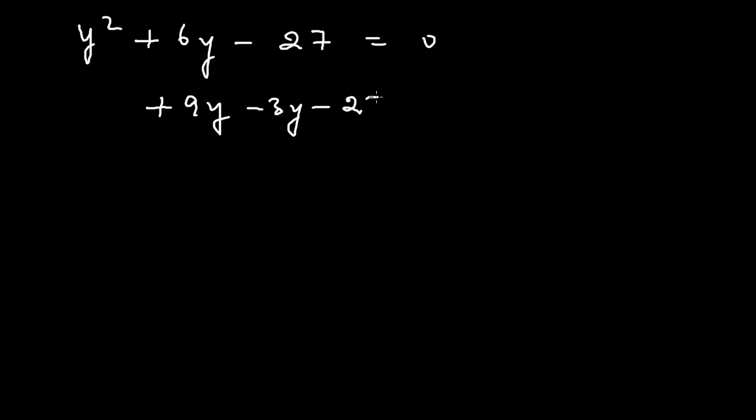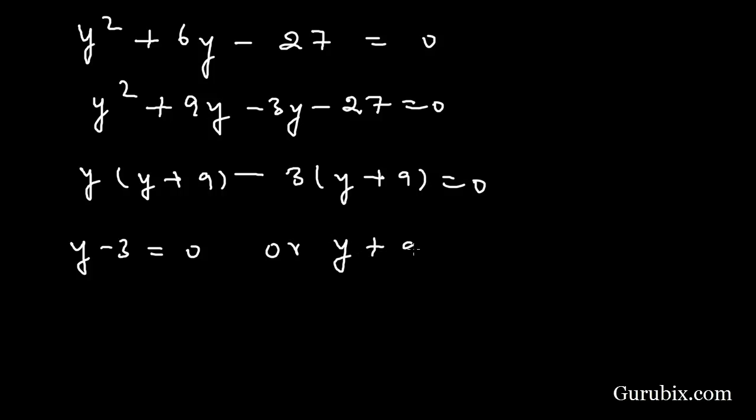Here we have minus 27 equals 0, so here is Y square. We shall take common Y from both these two terms. Then it will be Y(Y plus 9). Here we shall take common minus 3. Then it will be (Y plus 9) in the bracket.